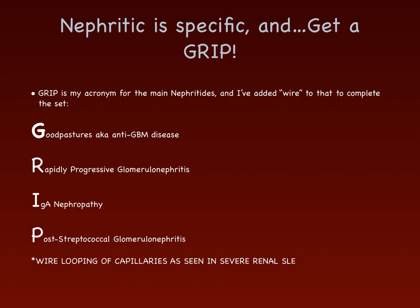WIRE is added for the wire looping of capillaries seen in severe renal SLE. SLE causes a nephrotic syndrome in initial stages, but if severe, it can progress to a nephritic syndrome. SLE renal lesions will be covered in a separate video.